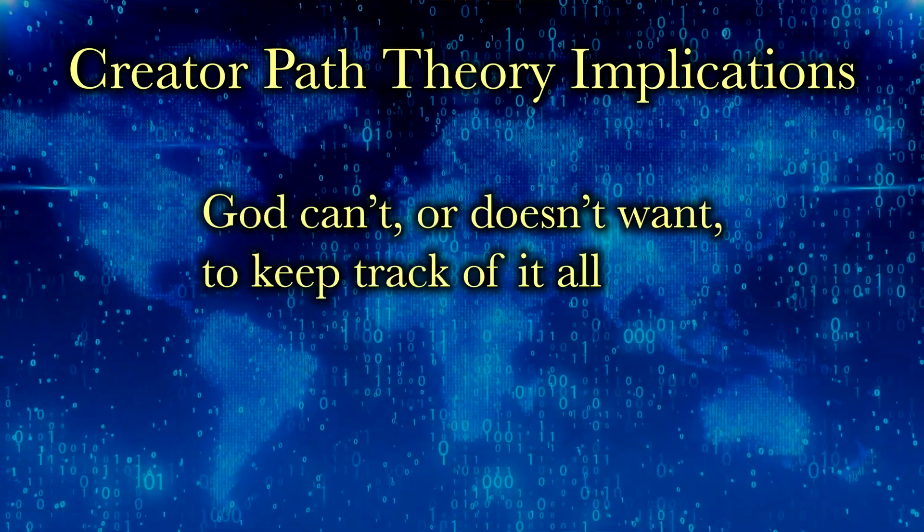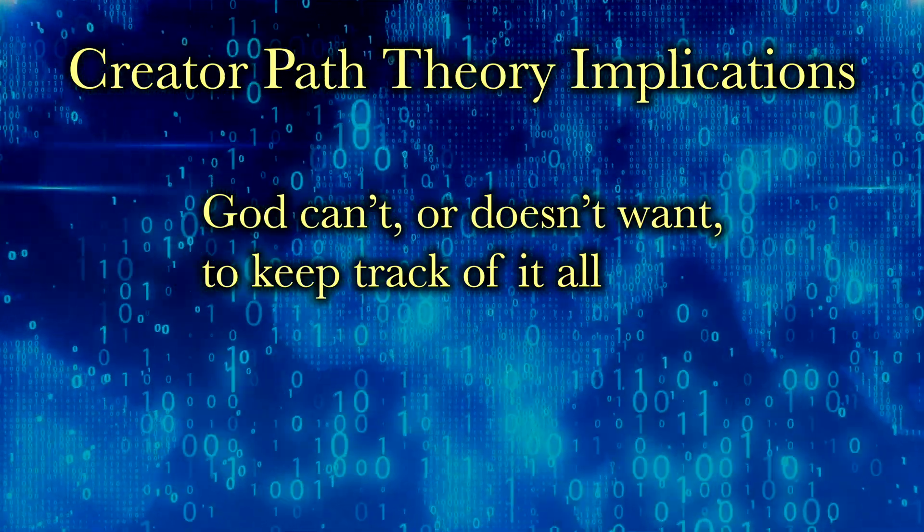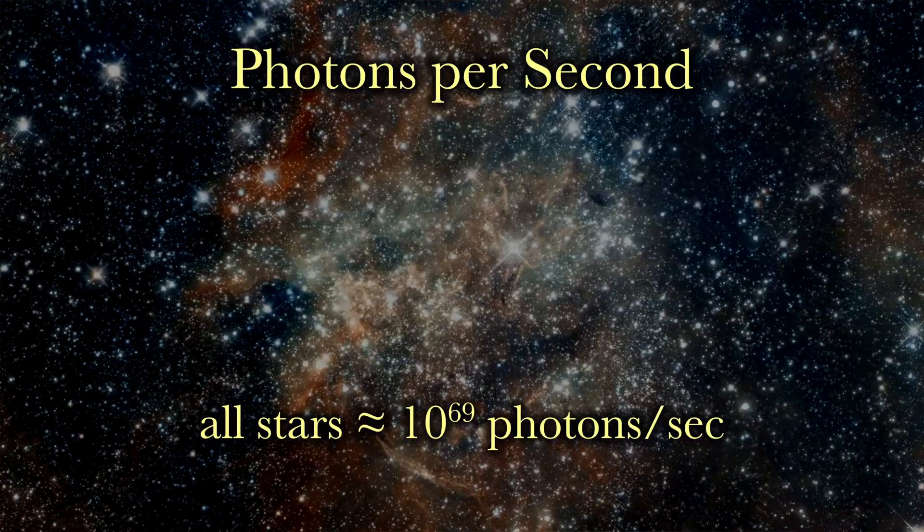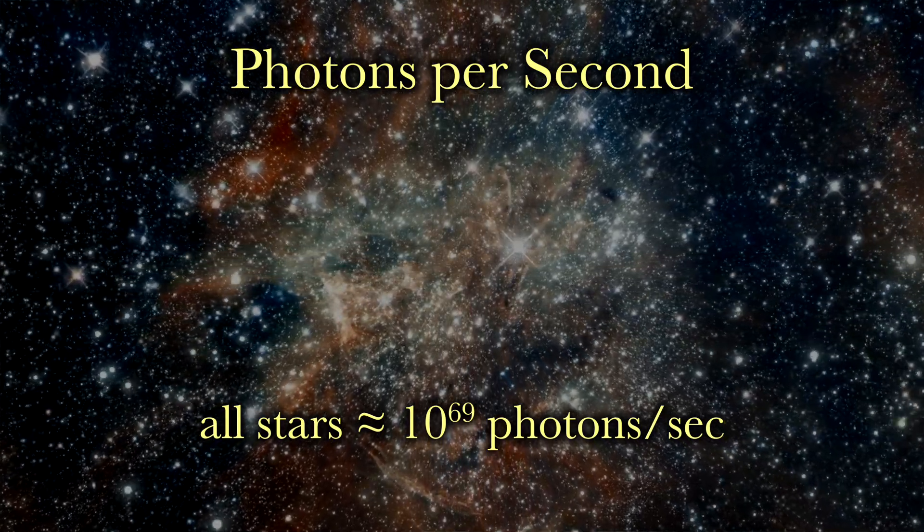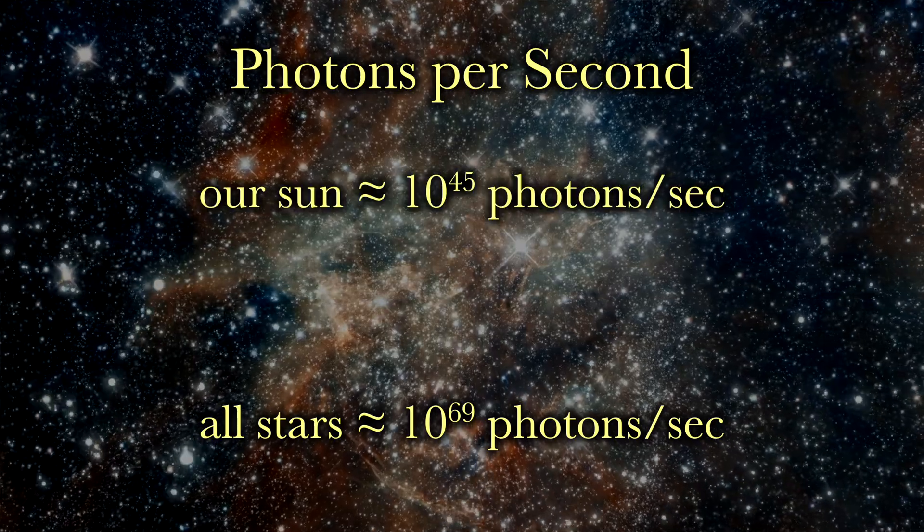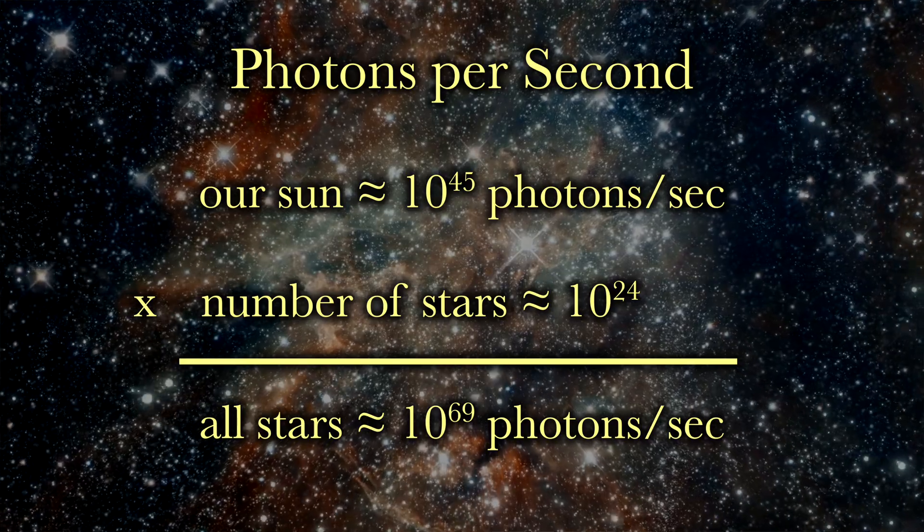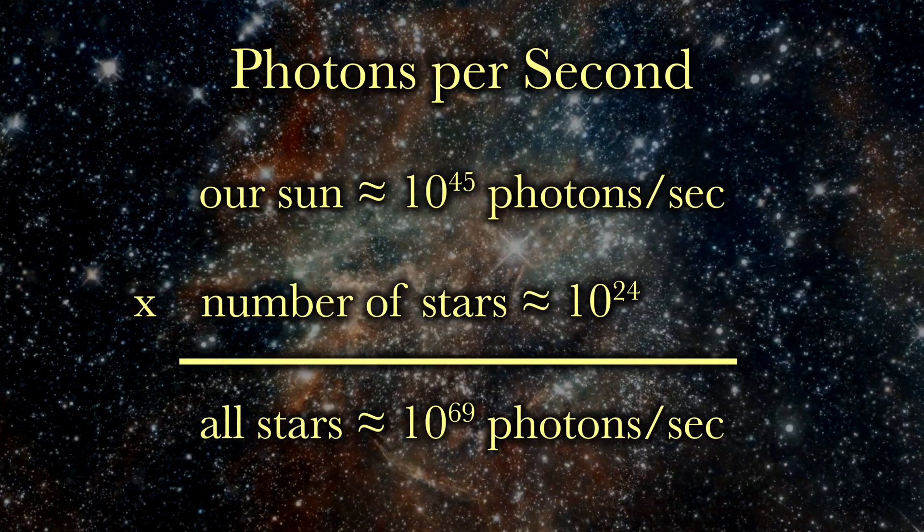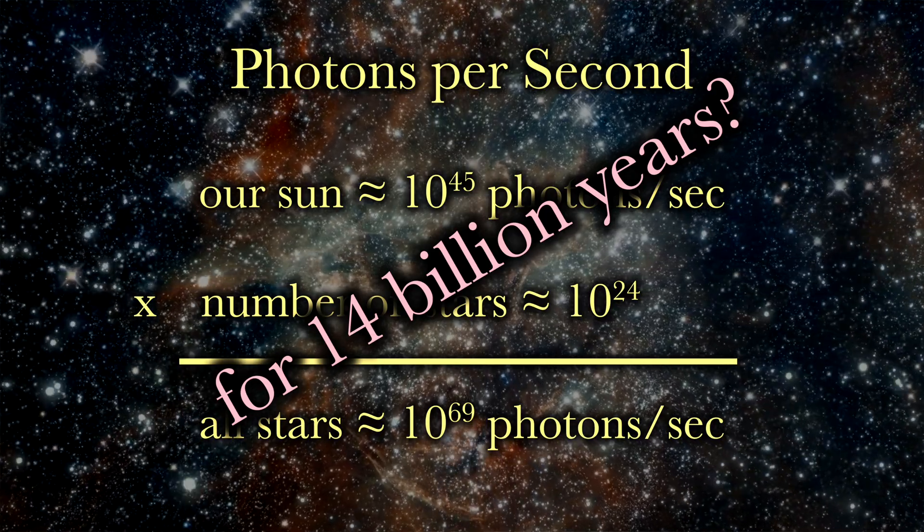There are those who would argue that it is ludicrous for God to track every photon in the universe. It would mean that God is monitoring about 10 to the 69 photon movements per second, if the sun emits 10 to the 45 photons per second and the universe contains 10 to the 24 stars. In addition to that, he has spent 14 billion years doing this. I agree that it sounds crazy, but it's pretty amazing if he's doing it all just for you.